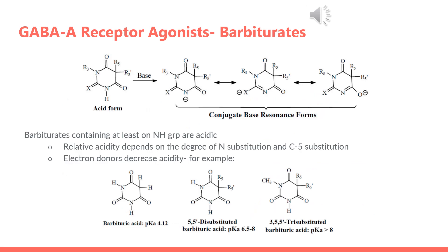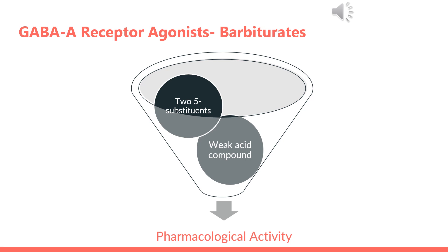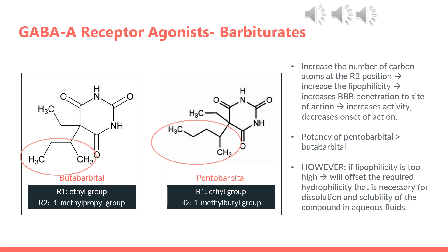Barbiturates containing at least one NH group are acidic. The relative acidity depends on the degree of N-substitution as well as C5-substitution, and electron donors decrease the acidity of the compound. For barbiturates to have pharmacological activity, the compound must be a weak acid and must also have 2,5-substituents. As the number of carbons at the R2 position increases, this increases the lipophilicity of the barbiturate and thus increases blood-brain barrier penetration, which increases activity and decreases onset of action. However, too high a degree of lipophilicity will offset the required hydrophilicity necessary for dissolution and solubility in aqueous fluids like blood, so there is a limit, beyond which pharmacological activity will begin to decrease.